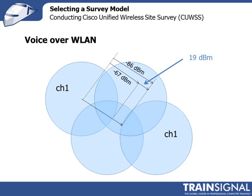If you're doing a voice over wireless LAN network, the distance between the access point and the edge of the cell boundary is determined by the receive signal strength. On the edge of the cell, you want your receive signal strength to be -67 dBm or better. Regarding the separation between two access points operating on the same frequency, you want to make sure the distance from one access point to the cell boundary of the second access point is -86 dBm or lower.